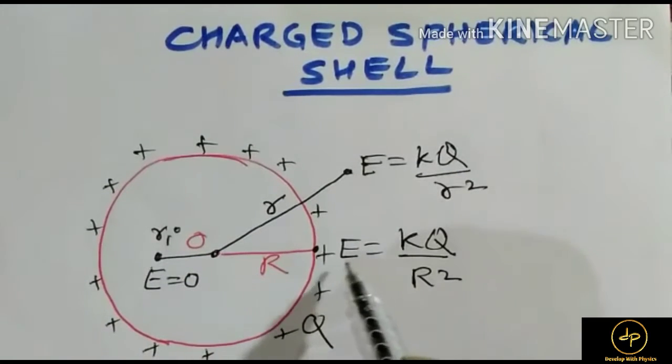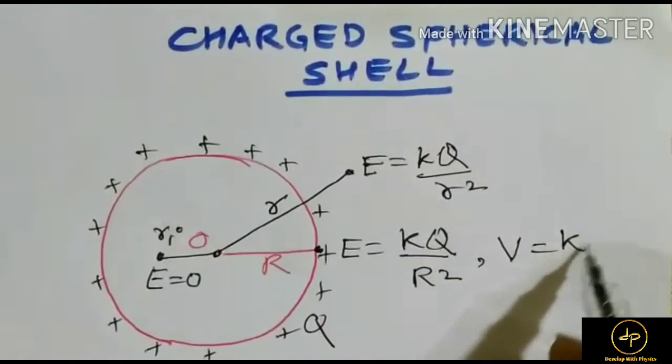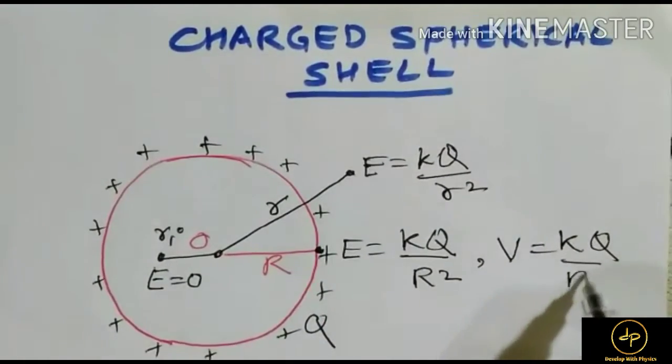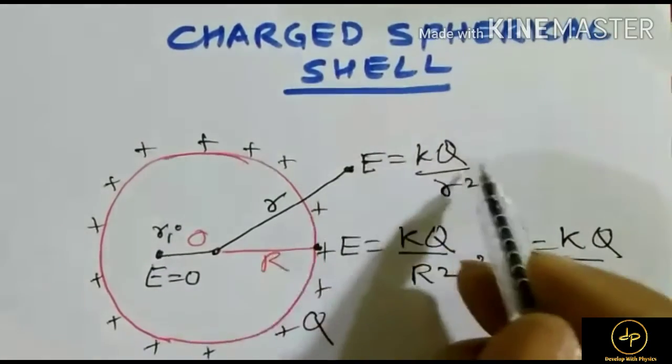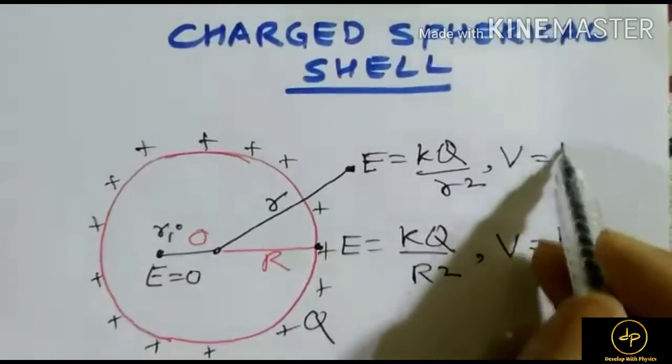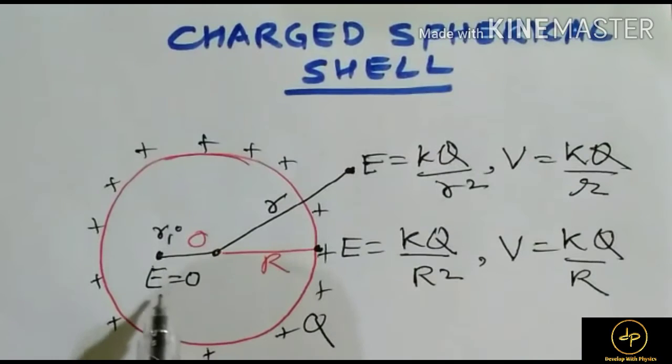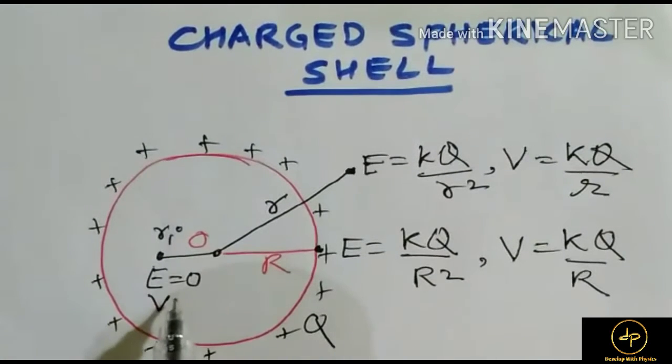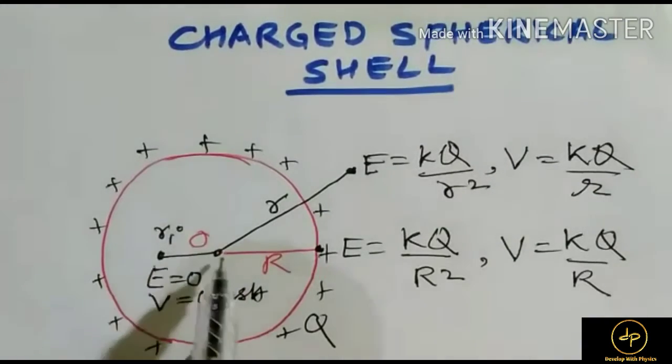The value of potential at a point on the surface is kQ/R. At a point outside, the potential is kQ/r. Inside the shell, the potential is V and that is constant.